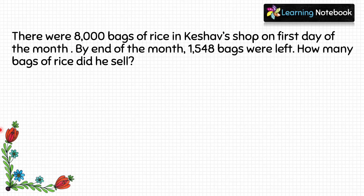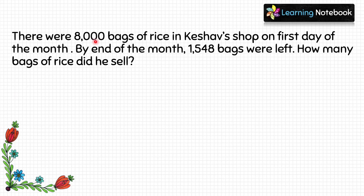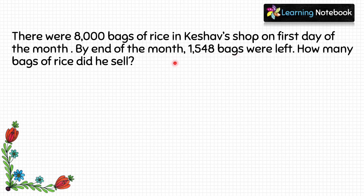Now the third word problem: there were 8000 bags of rice in Keshav's shop on the first day of the month. By the end of the month, 1548 bags were left. How many bags of rice did he sell? We are given 8000 bags at the start. During the month Keshav sold some bags and was left with 1548. We need to find the number of bags sold during the month.